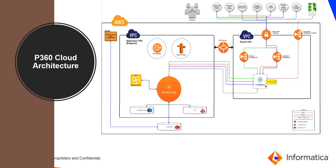The P360 server connects to the database via an AWS RDS instance. If servers need to access shared files — such as license files, import/export data files, or server properties — those are stored in EFS. EFS is an AWS Elastic File System used as shared storage across the different app servers, including the P360 server and SupplierPort server.